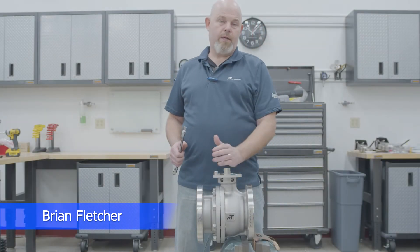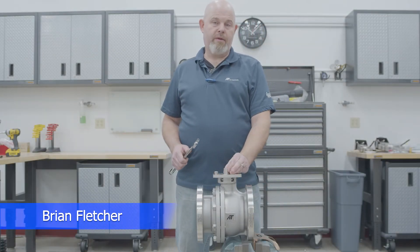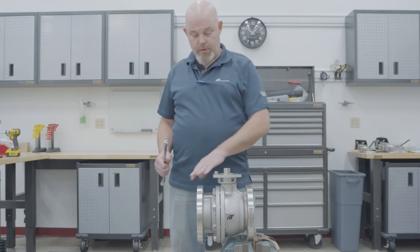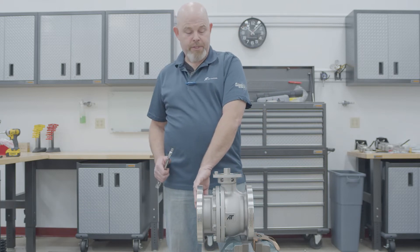Today we're going to be discussing how to mount an electric on-off actuator to a D9 valve. First thing you want to do is make sure the actuator and valve are in the same position when mounting them.